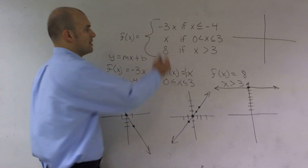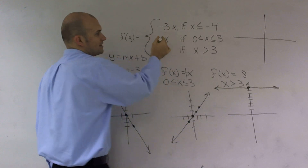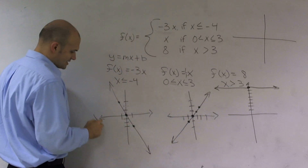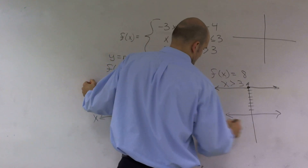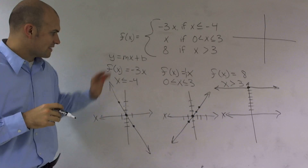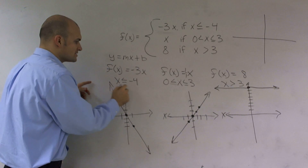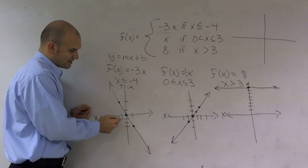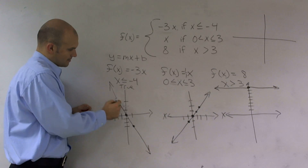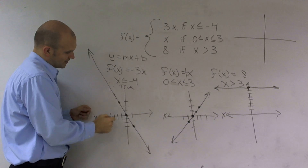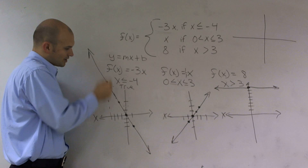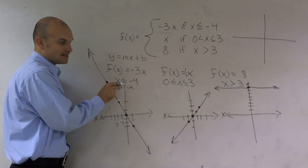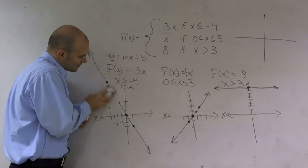So those are the three separate functions. Now let's look at our constraints, which deal with x values on the x-axis. The first graph is only true when x ≤ -4. So going over to -4 on the number line, all other points where x is greater than -4, like -3, -1, or 1, are not less than or equal to -4. Therefore they're not true and won't be included on my graph.